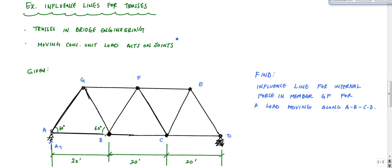We're continuing with influence lines, and this one we're going to talk about influence lines for trusses, because trusses are so big in bridge engineering and you have a lot of vehicles or trains going across trusses. The process is the same — we're going to use the brute force technique, moving the load across the various joints and calculating the force in a specific member at each load position. With trusses, we apply the concentrated load only at the joints.